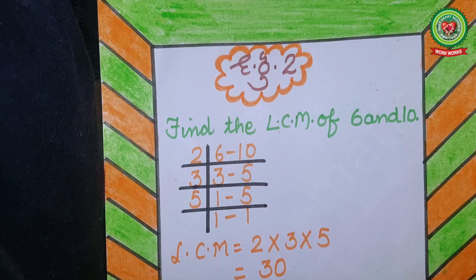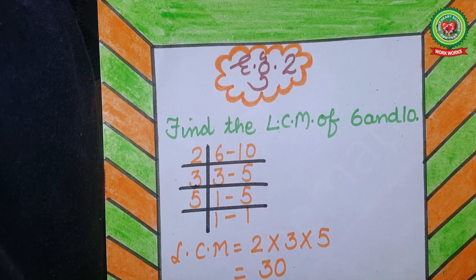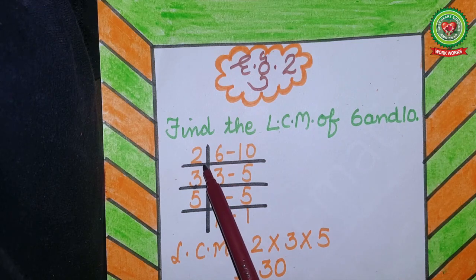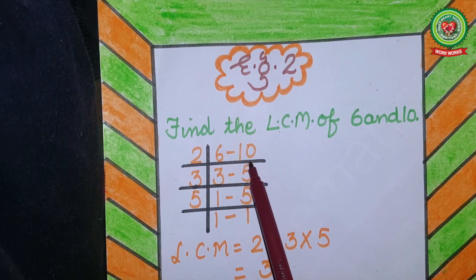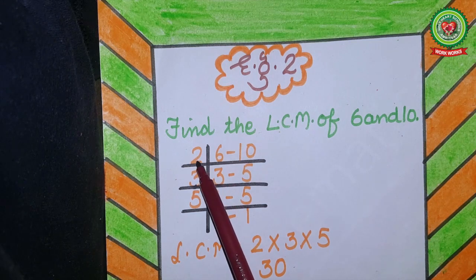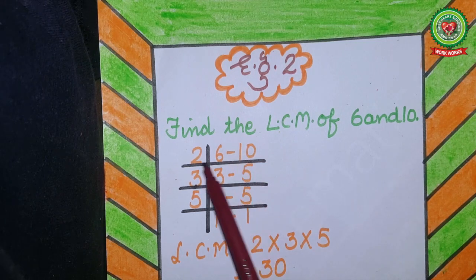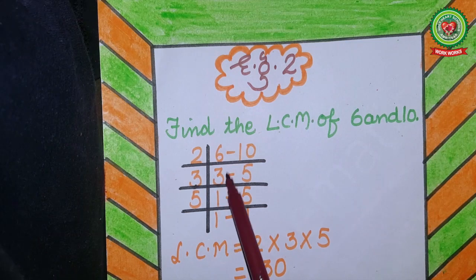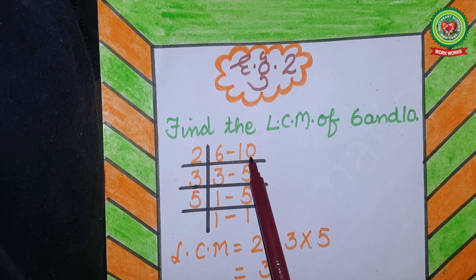Firstly, arrange these two numbers in a row. Now 6 is an even number, so it is divisible by 2. 10 is also an even number, so it is also divisible by 2. We write 2 as the divisor. On the 2 times table, 6 comes on 3 — 2 threes are 6. On the 2 times table, 10 comes on 5 — 2 fives are 10. So write 3 below 6 and 5 below 10.